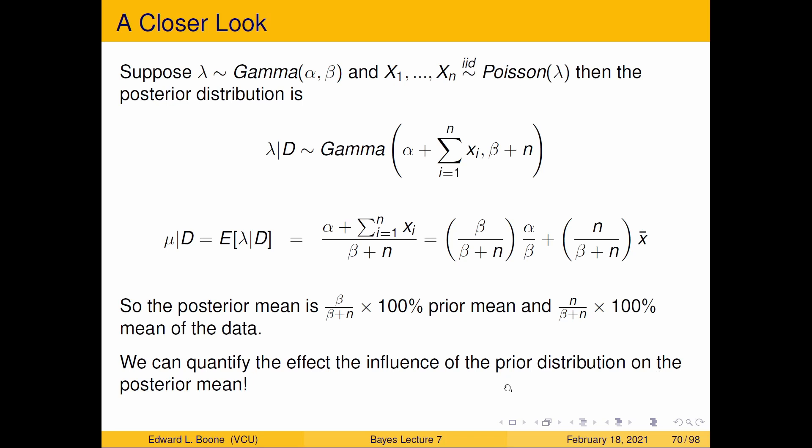So we can actually quantify the effect or the influence of the prior distribution on the posterior mean. And this becomes really useful because somebody would say, well, you're using a Bayesian method and it requires a prior distribution that has some influence on your answer. And you can go, yes, it does, and let me tell you how much it does.